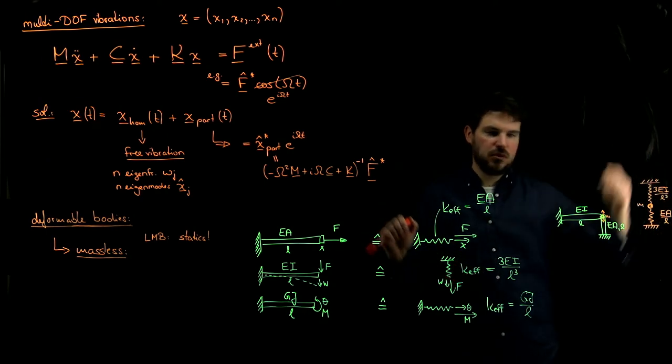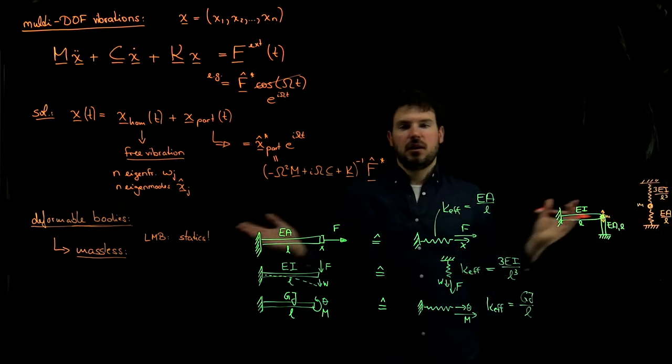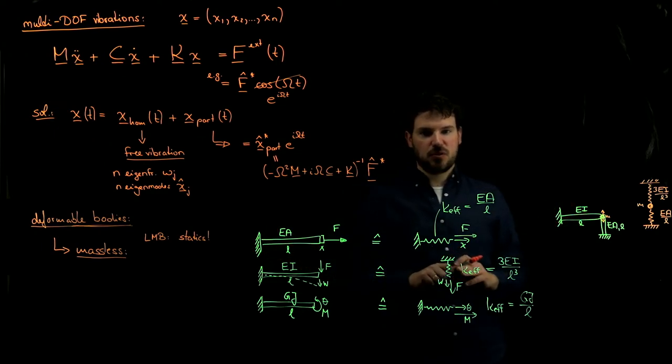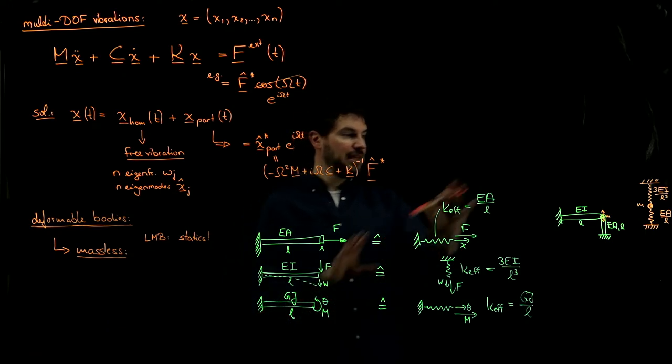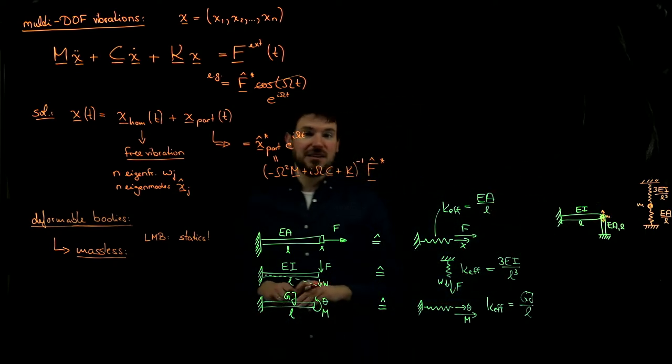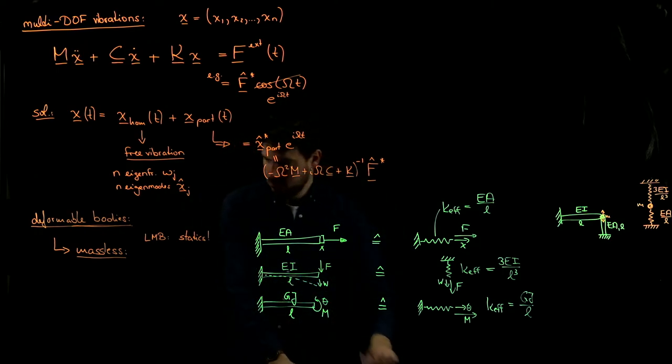The K effective is the total K effective that we obtain from two springs in parallel, and that leads to a very simple equation of motion. So whenever we have massless bodies, we can replace them by their effective elasticity, by their effective springs.